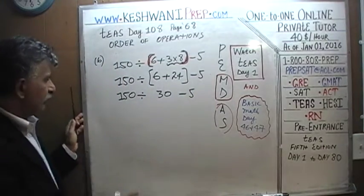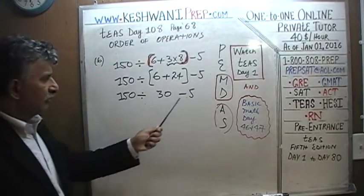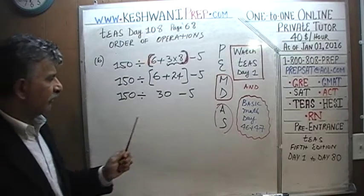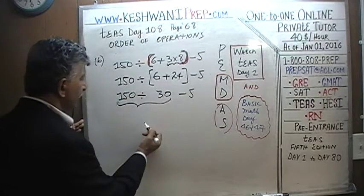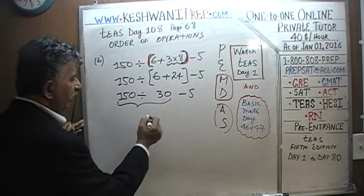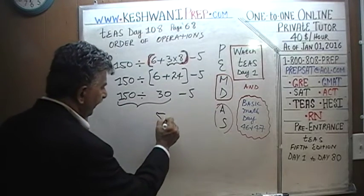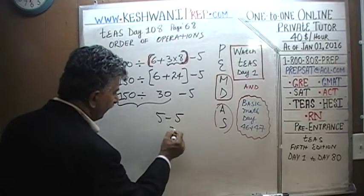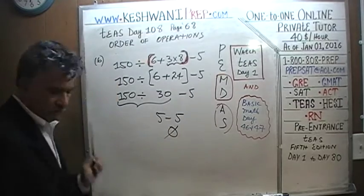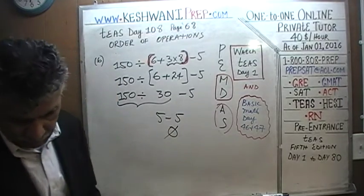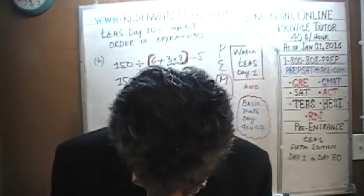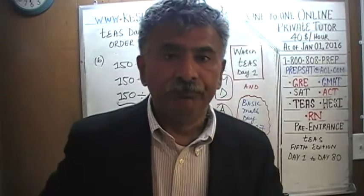Now we have to do division first, because division comes before subtraction. So we do 150 divided by 30, which is 5, and then minus 5. The answer is going to be zero.